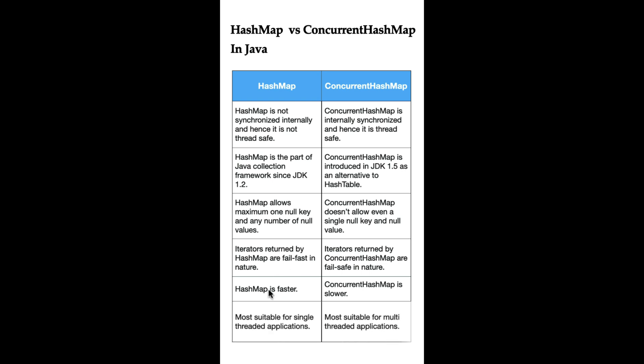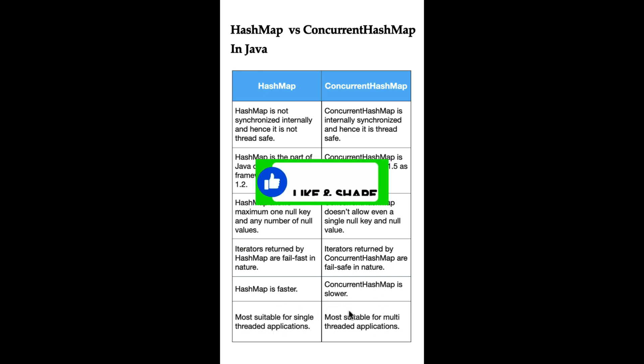HashMap is faster in single-threaded scenarios, whereas ConcurrentHashMap can be slower due to its internal synchronization. HashMap is most suitable for single-threaded applications, whereas ConcurrentHashMap is most suitable for multi-threaded applications.